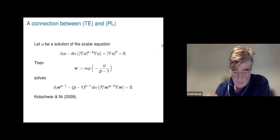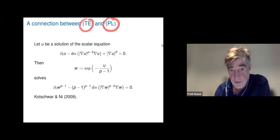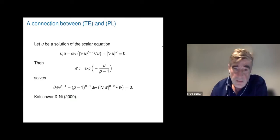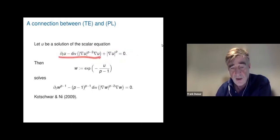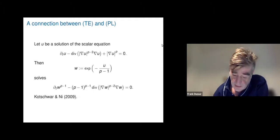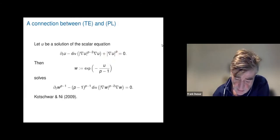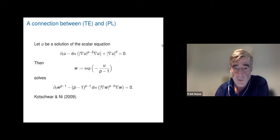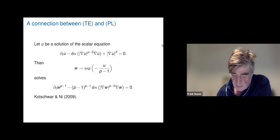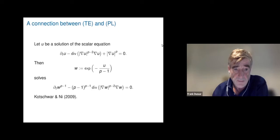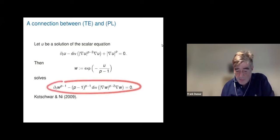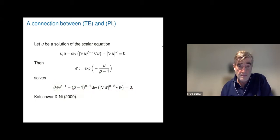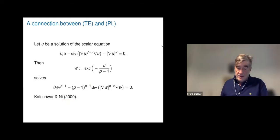There is a very interesting connection between Trudinger's equation and the parabolic p-Laplacian. If u solves the parabolic p-Laplacian equation plus |∇u|^p, and you apply the transformation w = exp(−u/(p−1)), then w satisfies Trudinger's equation (up to a constant). This was observed by Kochube-Renyi in 2009.